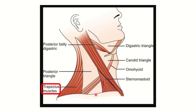The inferior part of the posterior triangle is formed by the middle third of the clavicle. One important note: the posterior triangle is divided into two parts by the omohyoid muscle. So the posterior triangle is divided into two parts by the omohyoid muscle, and its posterior border is formed by the trapezius muscle, which is the answer to this question.